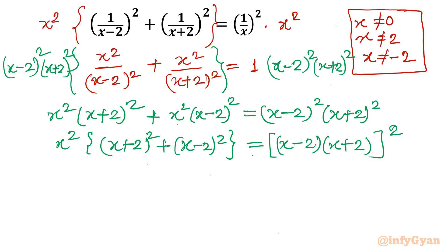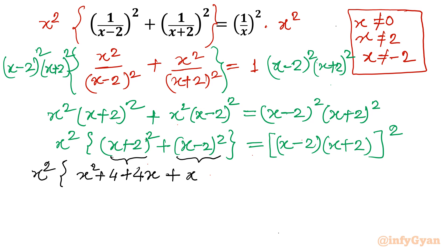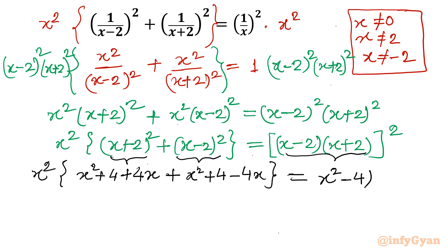Now let's expand using algebraic identities. For the LHS, (a plus b) squared expands to a squared plus b squared plus 2ab, and (a minus b) squared expands to a squared plus b squared minus 2ab. On the right-hand side, (a plus b)(a minus b) gives the difference of squares formula: a squared minus b squared. So the RHS becomes (x squared minus 4) squared.